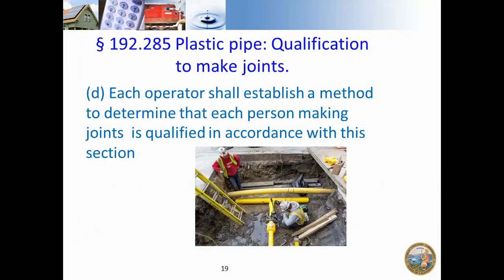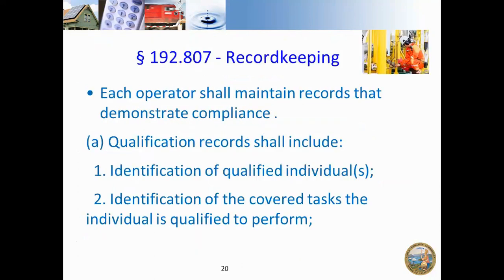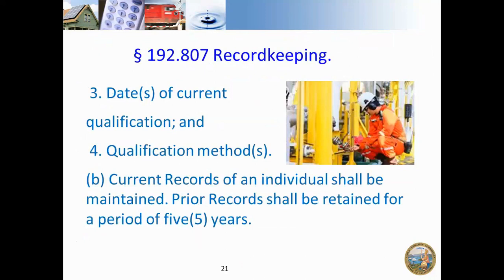Each operator shall establish a method to determine that each person making joints is qualified. Records should be kept — this qualification record should include: identification of the individual, covered tasks that the individual performed, date of current qualification, and the qualification methods used. Records should be kept for five years.